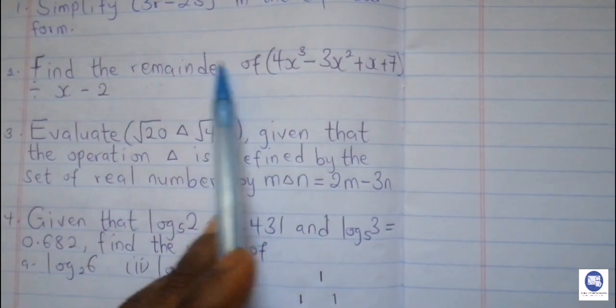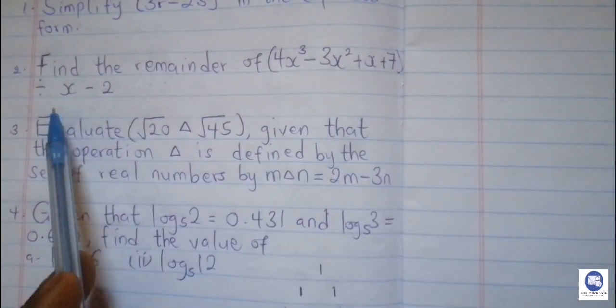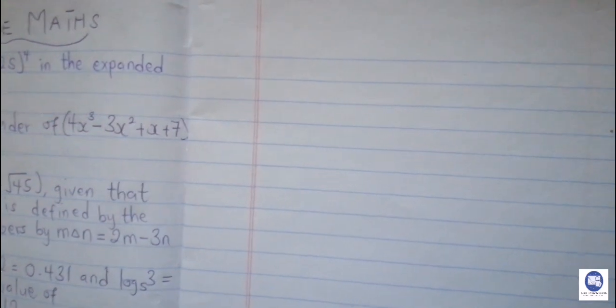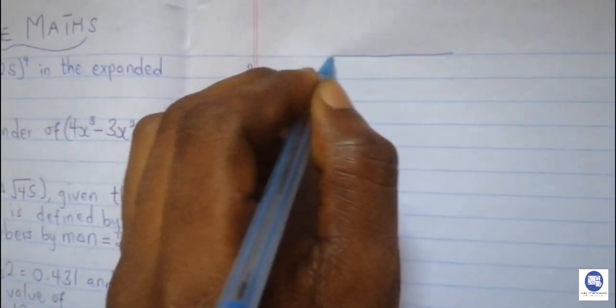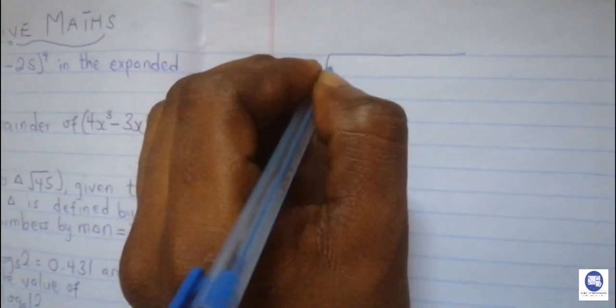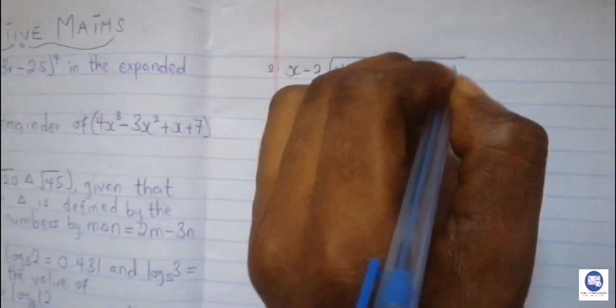Number 2 says that we should find the remainder of 4x³ minus 3x² plus x plus 7 divided by x minus 2. For polynomial division, we can use long division or synthetic division. Let's use the long division of polynomials, just like we do our normal long division. Our divisor is x minus 2, and our dividend is 4x³ minus 3x² plus x plus 7.